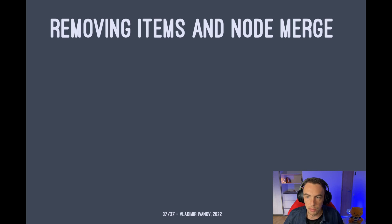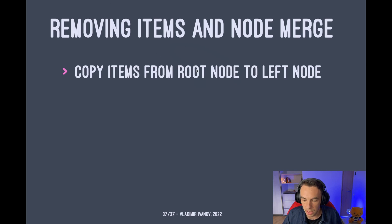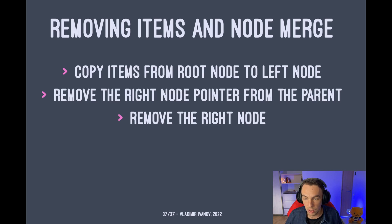What about removing items and node merge? If you remove the item from the node and keep removing the values from the node, then its capacity can become less than this two times T thing and become even less than T minus one thing. Then we need to merge this node to another node. And the algorithm has three steps. First of all, we copy items from the right node to the left node. Then we remove the right node pointer from the parent. And then we remove the right node. And if we need to repeat this process, then we just propagate the changes up to the root node.